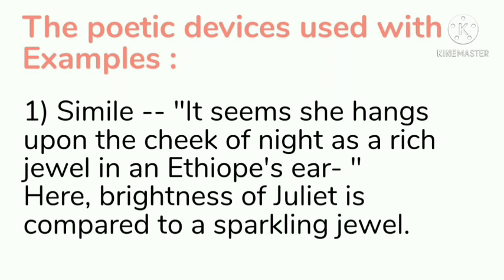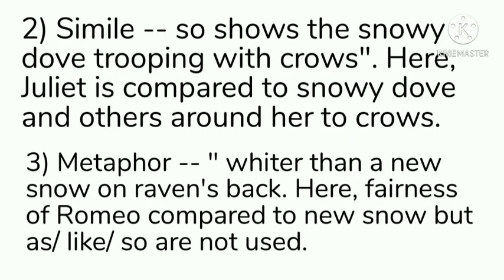The poetic devices used with examples: First, simile — 'It seems she hangs upon the cheek of night as a rich jewel in an Ethiop's ear.' Here the brightness of Juliet is compared to a sparkling jewel using 'as.' Second, also a simile — 'So shows the snowy doe trooping with crows.' Here Juliet is compared to a snowy doe and others around her to crows; the word 'so' is used like 'as' or 'like.'